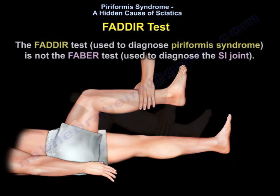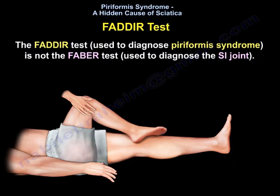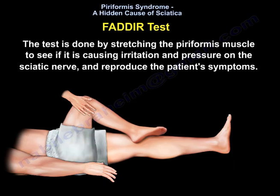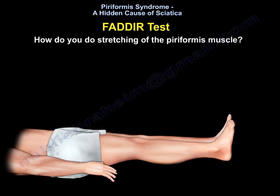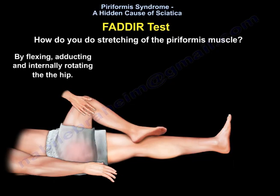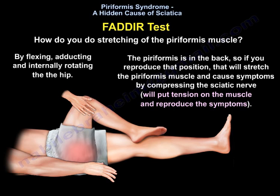The FAIR test is used to diagnose piriformis syndrome, not the sacroiliac joint. The test is done by stretching the piriformis muscle to see if it causes irritation and pressure on the sciatic nerve and reproduces the patient's symptoms. You stretch the piriformis by flexing, adducting, and internally rotating the hip. Reproducing that position will stretch the piriformis muscle and compress the sciatic nerve, putting tension on the muscle and reproducing the patient's symptoms.